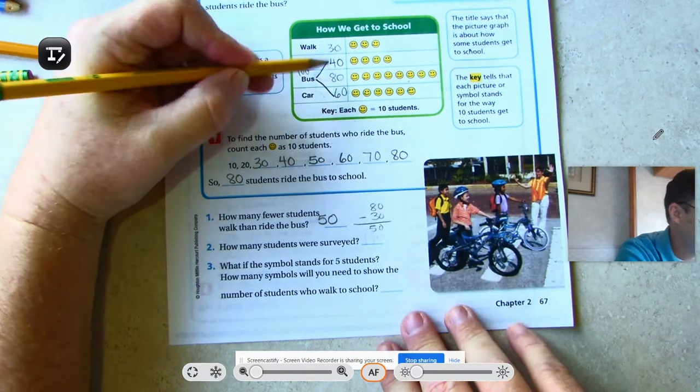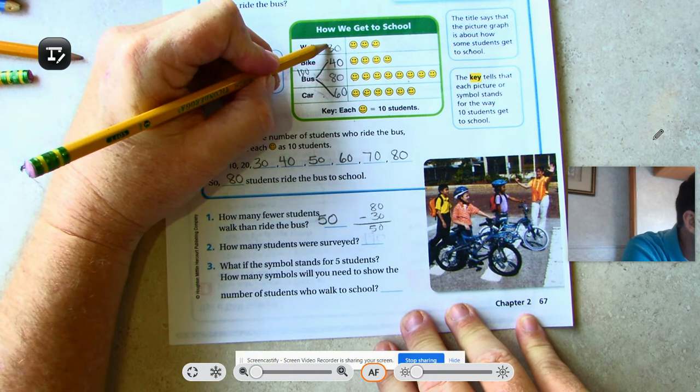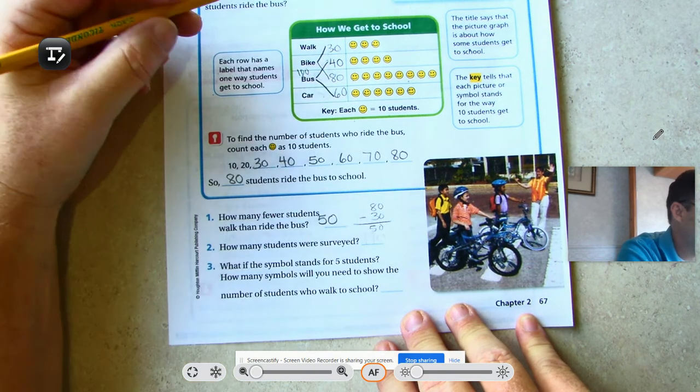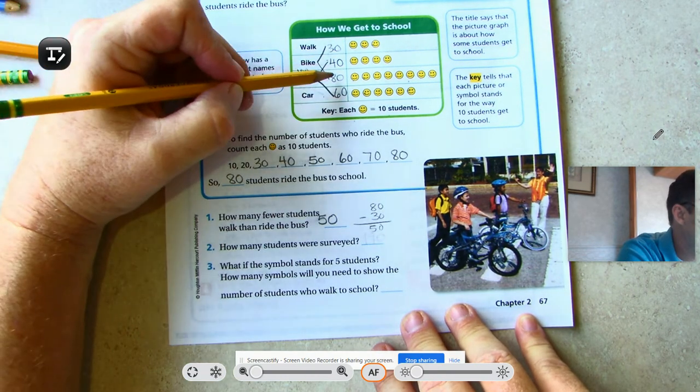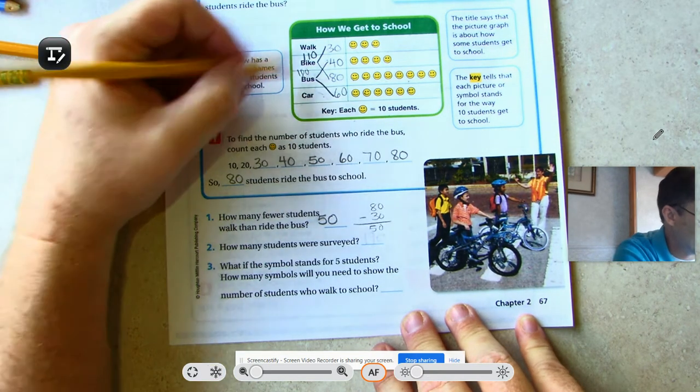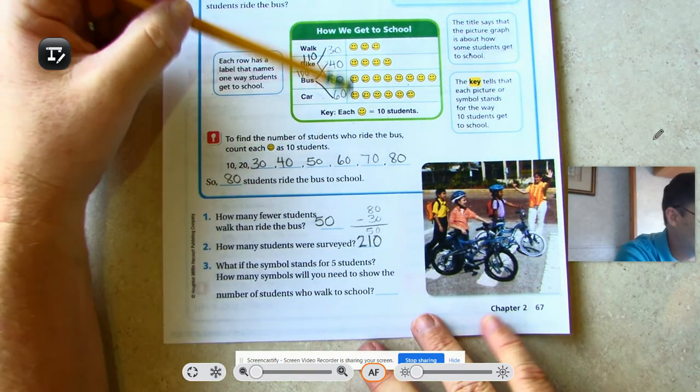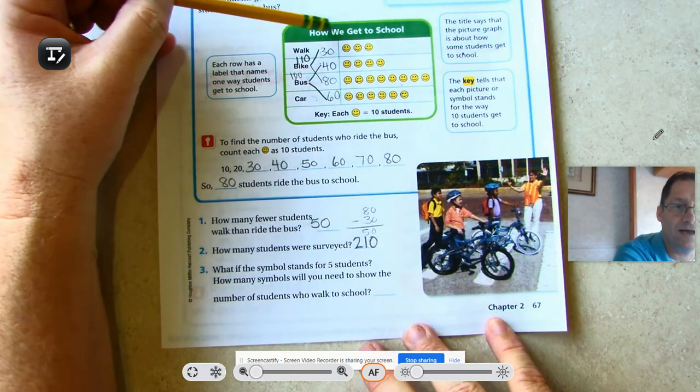60 and 40 is 100. But I should be adding 30 and 80 for my second number. 30 and 80 is 110. Now add those together, we have 210. The other way we could have done that is just skip count by tens, counting all the happy faces.